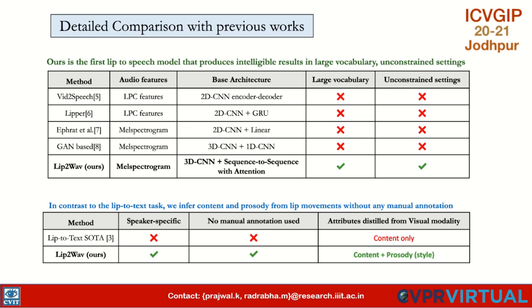There had been some previous work done for this problem. However, these works specifically dealt with laboratory settings with no head movements or expressions. The works also dealt with a minuscule vocabulary of around 50 words, and most used rudimentary encoder-decoder architectures resembling image autoencoders. The networks from previous works were also trained for a single speaker at a time.